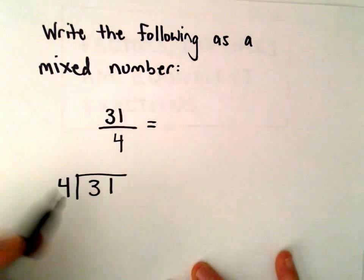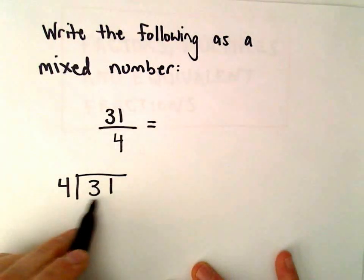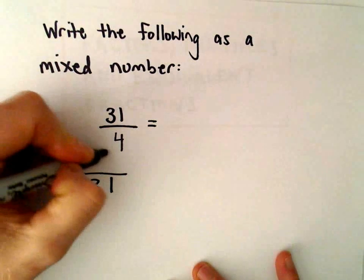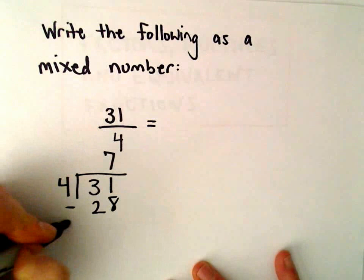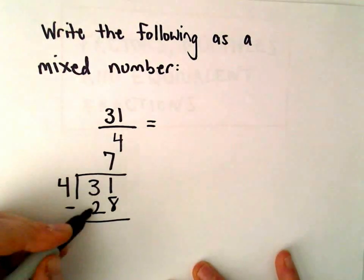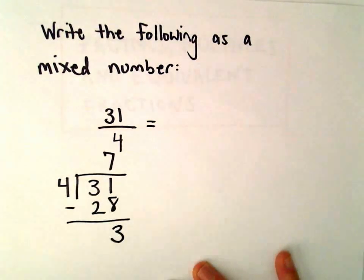And to do this I think, well, okay, so let's see, 4 certainly won't go into 3. 4 will go into 31, I guess 7 times. So 7 times 4 is 28, and then we subtract. 31 minus 28 is going to be 3.